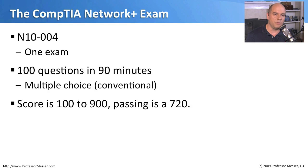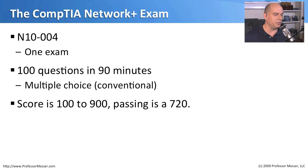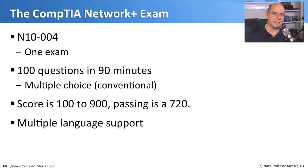The score you're looking for is 720. The score range is somewhere between 100 and 900 — an odd scoring system when you think about it, because it's not a percentage. Each question is worth a different amount, so whether you get a question right or wrong, it may be counted differently. Every question has a different weighting associated with it. Ultimately, you have to get at least 720 of those points to pass. If English isn't comfortable for you, there are other versions of the exam available.